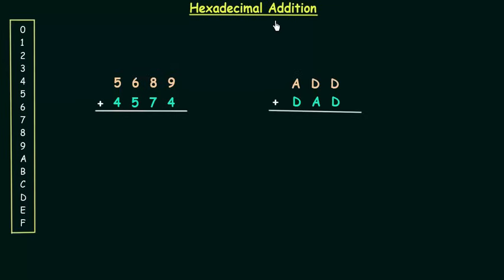In this lecture we will learn hexadecimal addition. Base in case of hexadecimal number system is equal to 16. Base or radix R is equal to 16. Hence we have 0 to 16 minus 1 different digits. This gives us 0 to 15.